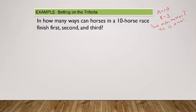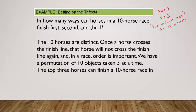Does order matter? Well, yes — it's a race, so obviously order matters. The 10 horses are distinct, once a horse crosses the finish line it won't cross again, and order is obviously important. So we have a permutation of 10 objects taken 3 at a time.